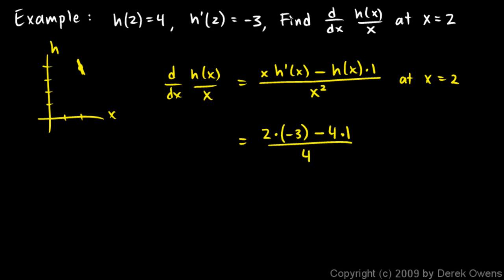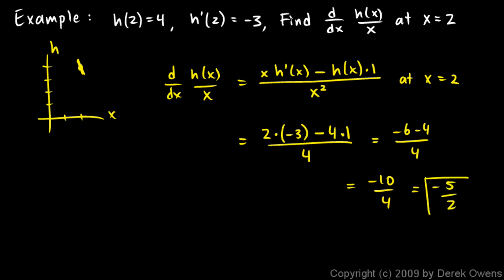So this works out to negative 6 minus 4 over 4, which is negative 10 over 4, or negative 5 halves.